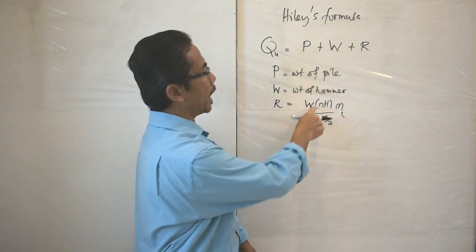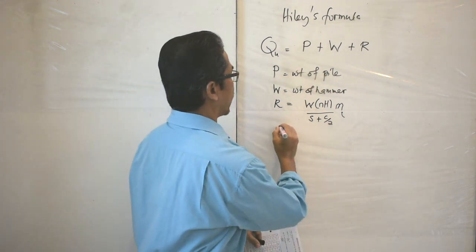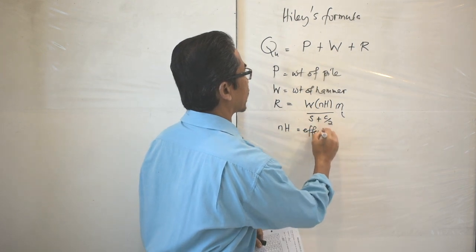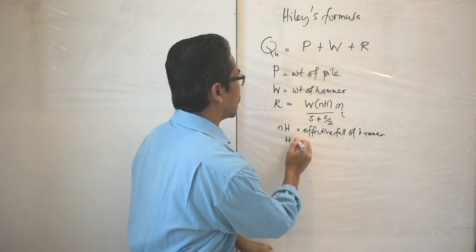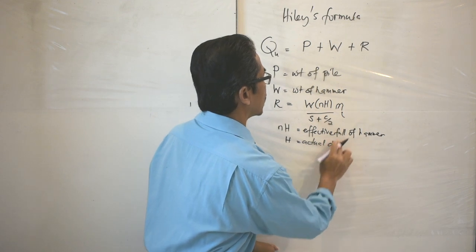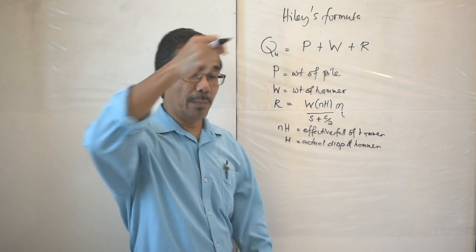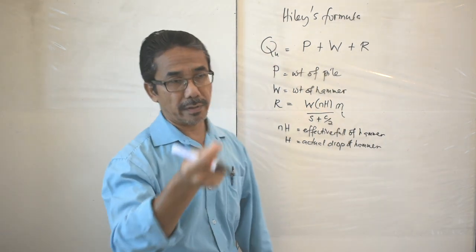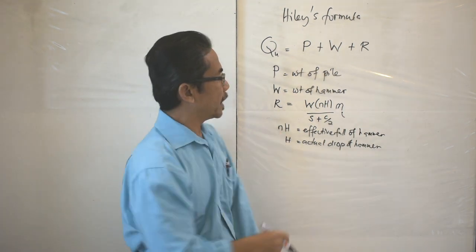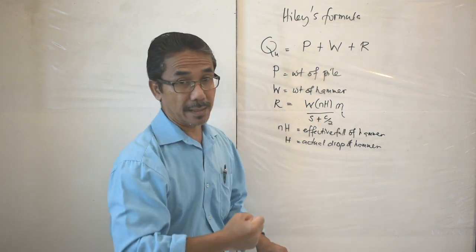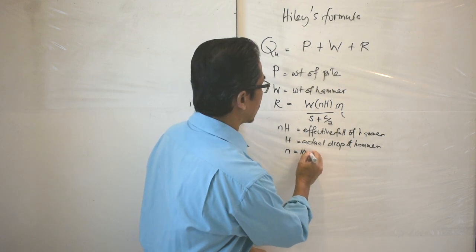The term n × H is known as the effective fall of the hammer. H is the actual drop of the hammer — we can set it to, say, 100 mm, 300 mm, or 500 mm. n is the coefficient related to the efficiency of the hammer. For a drop hammer — a hydraulic hammer lifted by a hydraulic system and released to fall freely by gravity — n equals 100% or 1, so the effective fall equals the actual drop.